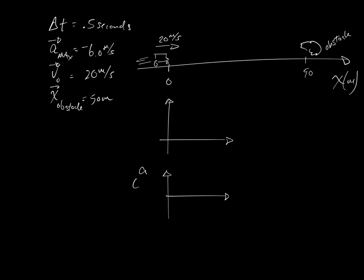So this is acceleration meters per second squared, time measured in seconds, and velocity meters per second. And I'll draw a dotted line at half a second.